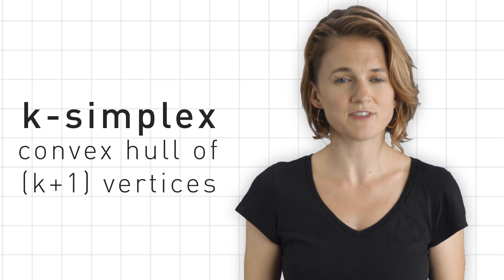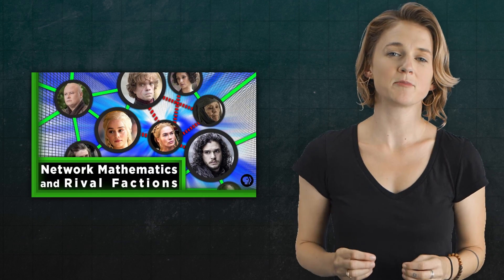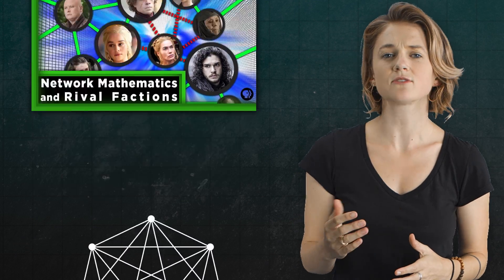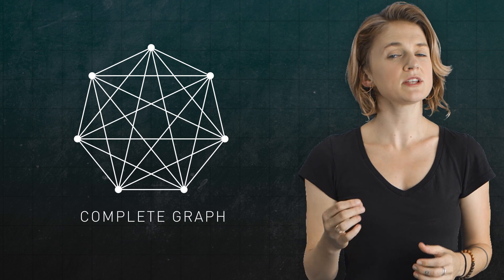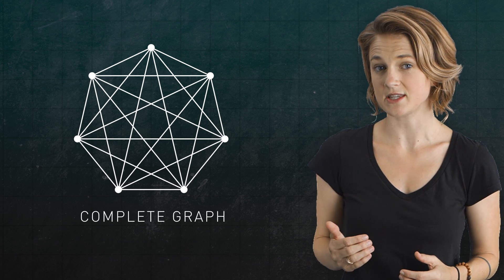what's known as the convex hull. Remember from our episode on structural balance that a complete graph is a graph where each vertex is connected to every other vertex by an edge. Well, we can interpret complete graphs as simplices.